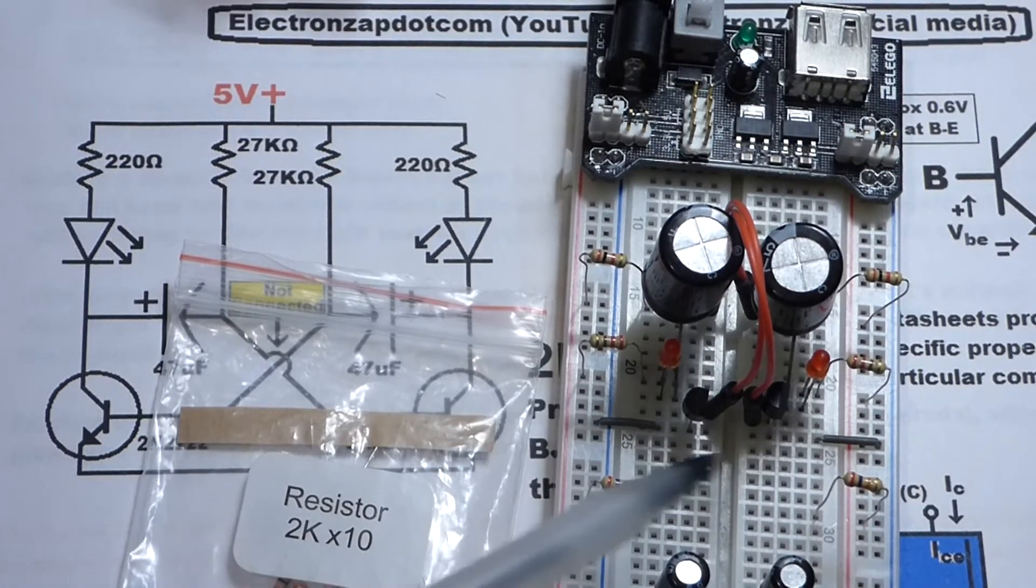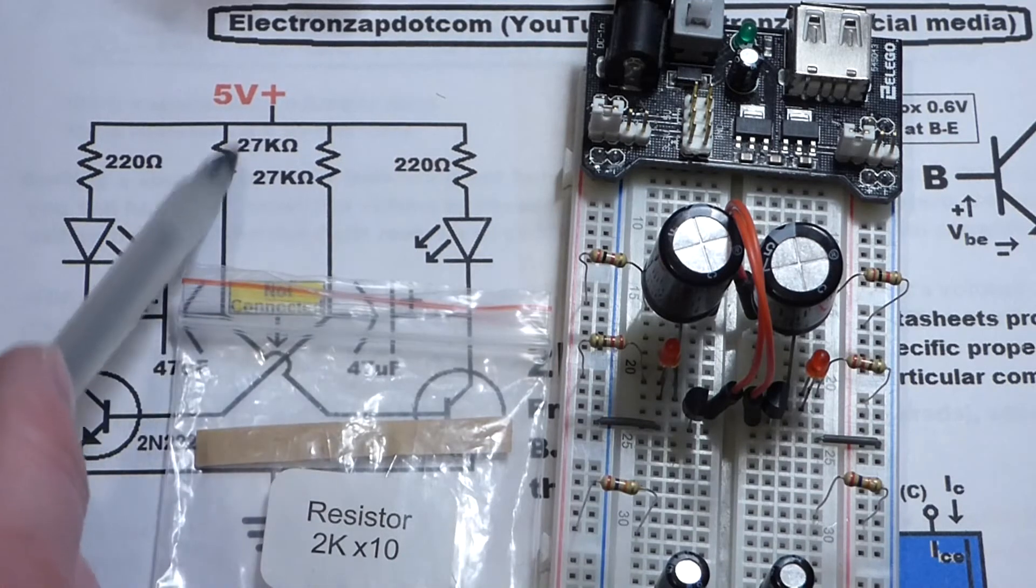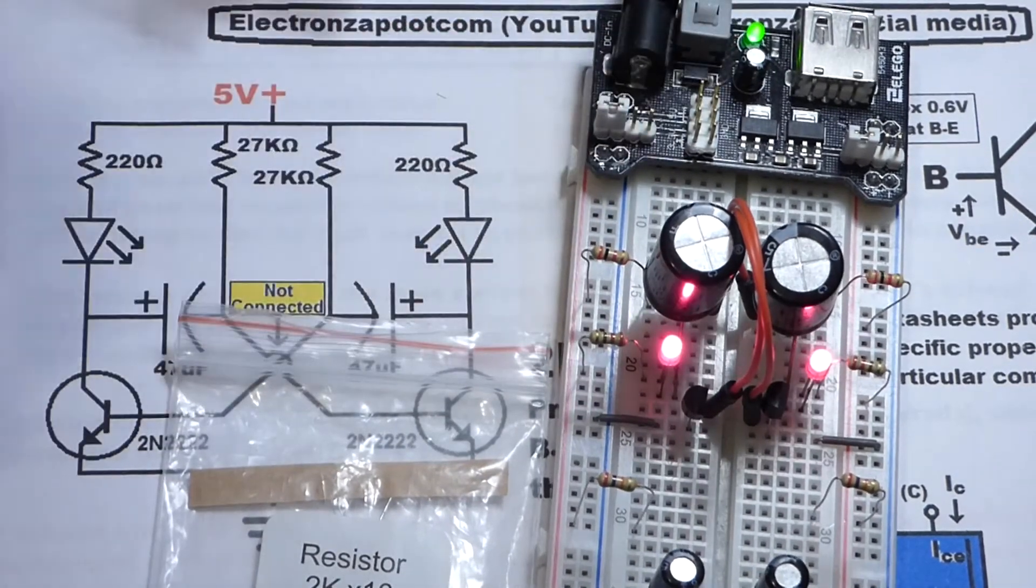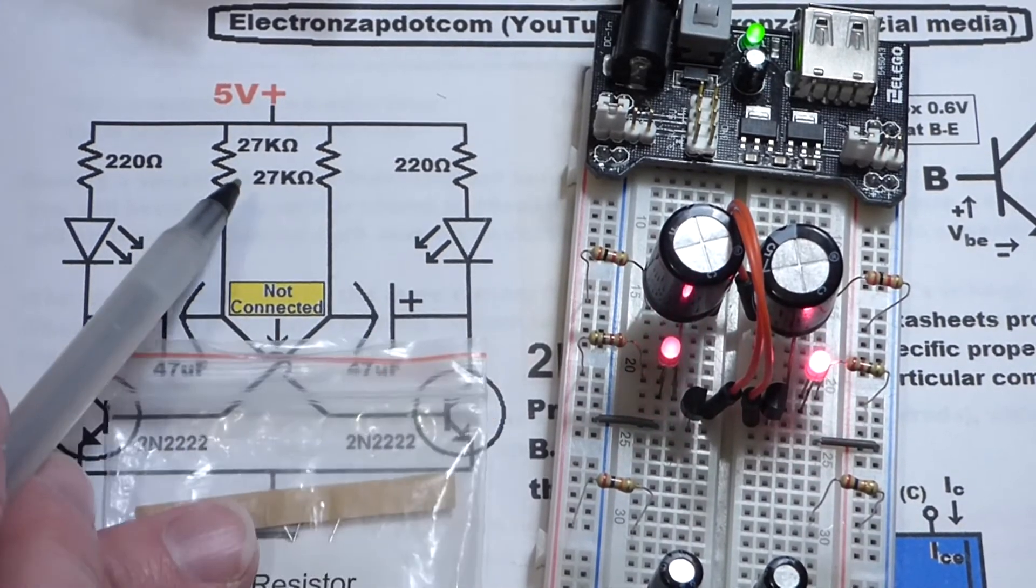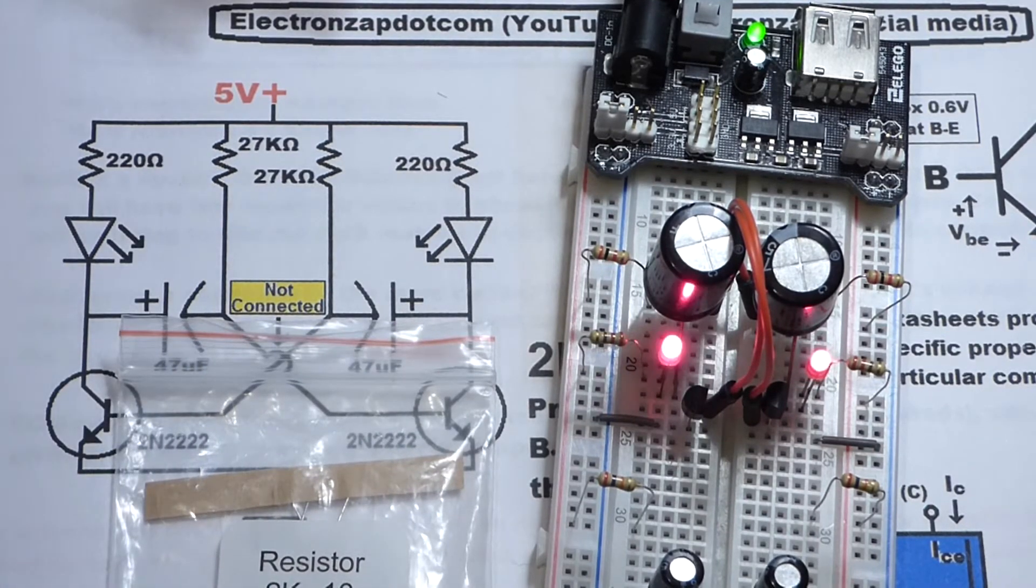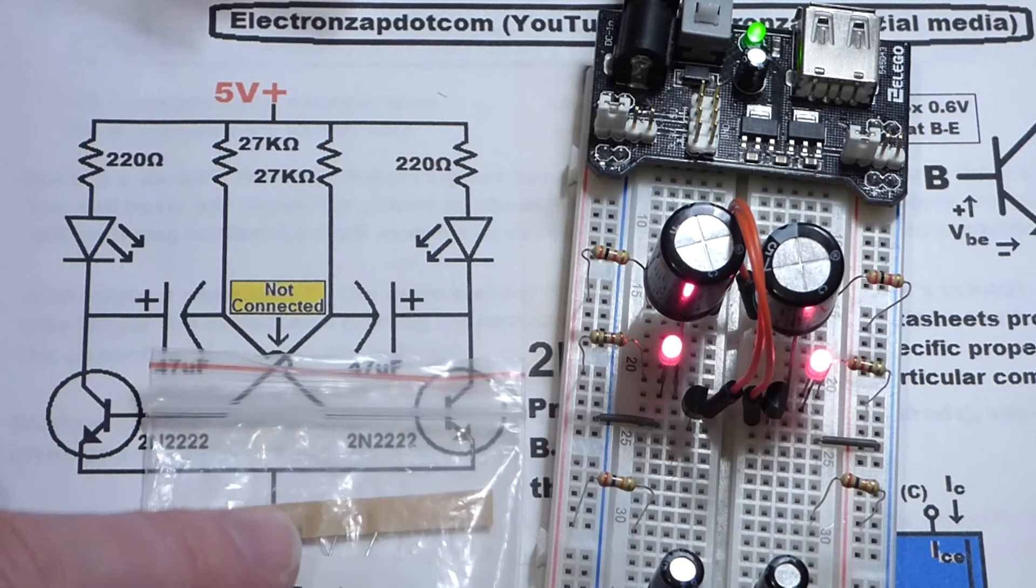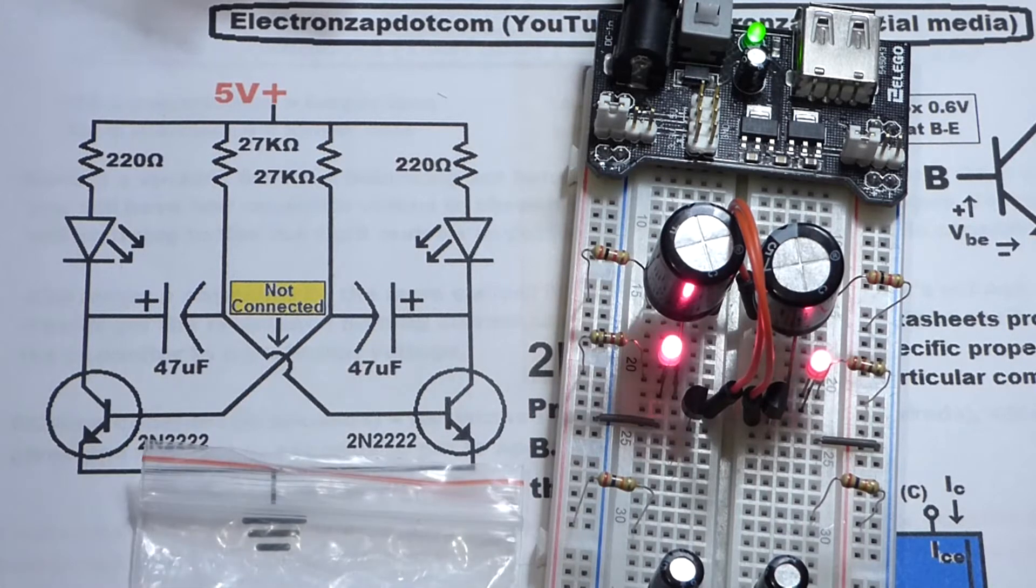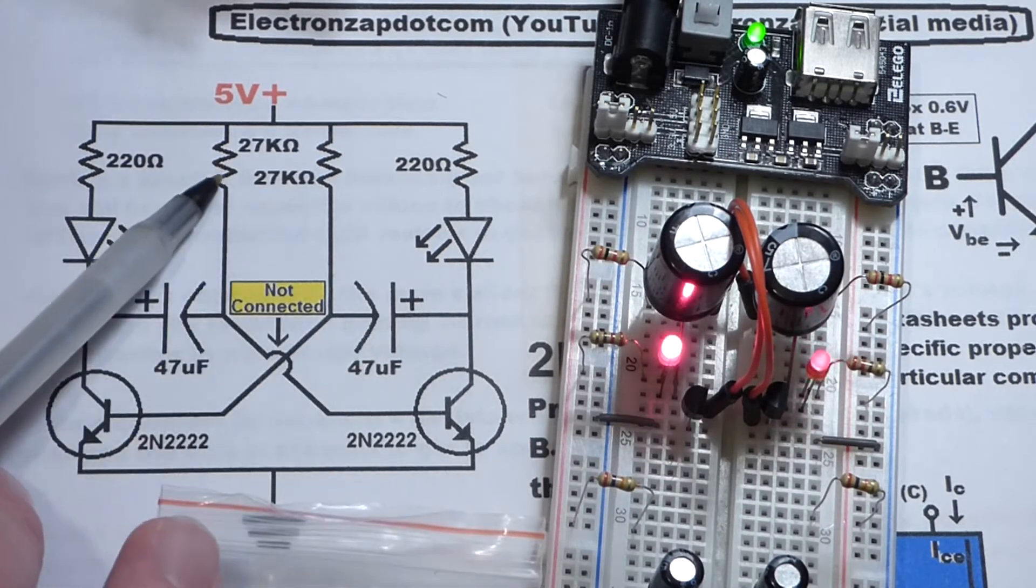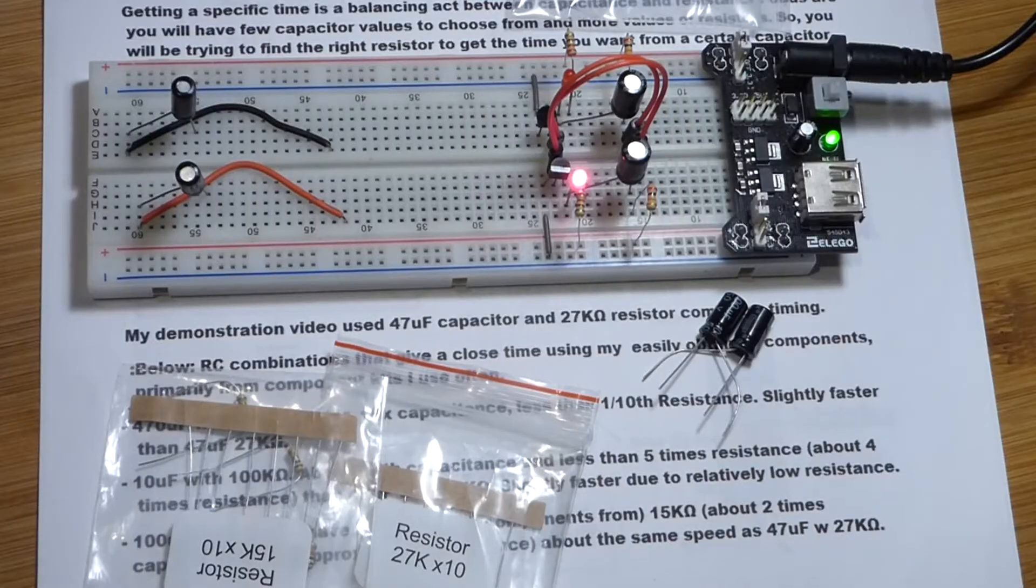So now, I swapped out the resistors. 27 kiloohms are waiting down there because we're going to grab them again. And up here now, to the capacitors, I have 2 kiloohm resistors. And you can see they're flashing a bit faster but still close to the speed that we had before. That's because we have 10 times the capacitance and close to one-tenth the resistance. It's a little less than one-tenth of the resistance. So that's going to make it go a little faster because we're getting a little more current than we want. But you can see it's pretty easy if you don't have the exact value capacitor you want to use a different capacitor in a timing circuit and adjust the resistors in that timing circuit accordingly.